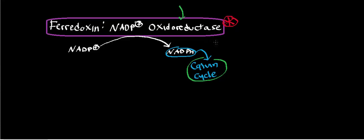We're going to talk about cyclic electron flow in the next video, and after that we'll talk about the Calvin cycle. But first, I want to give a little background on this enzyme. Ferredoxin NADP+ oxidoreductase can exist in two forms: it can exist bound to the thylakoid membrane, or it can exist free in the stroma of the thylakoid.